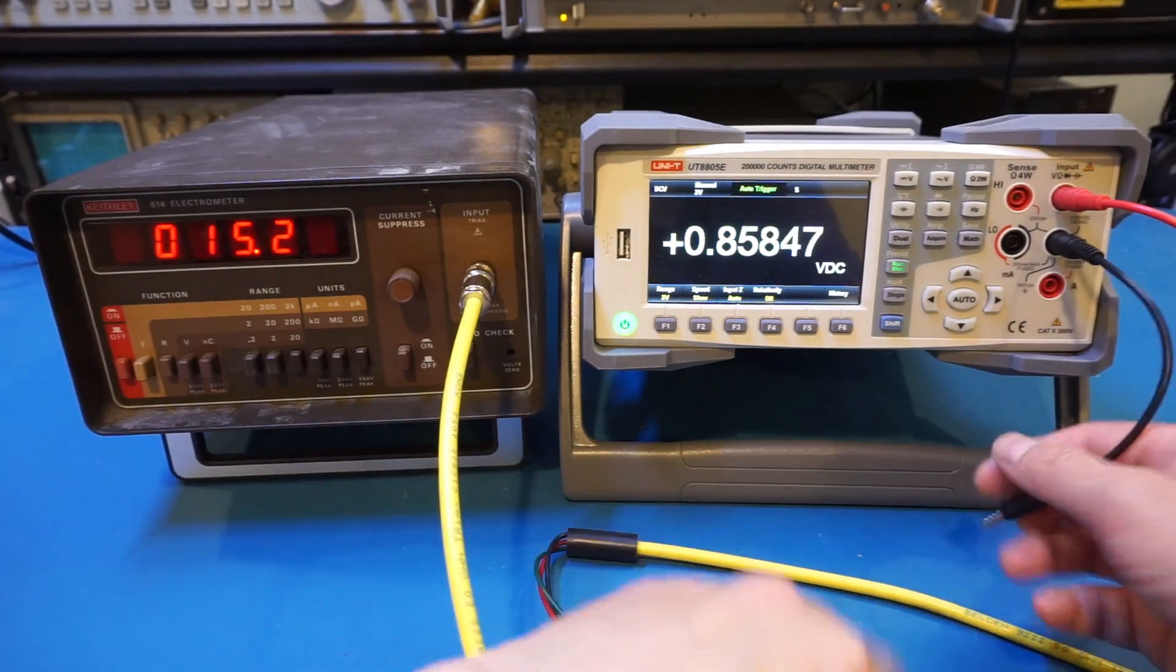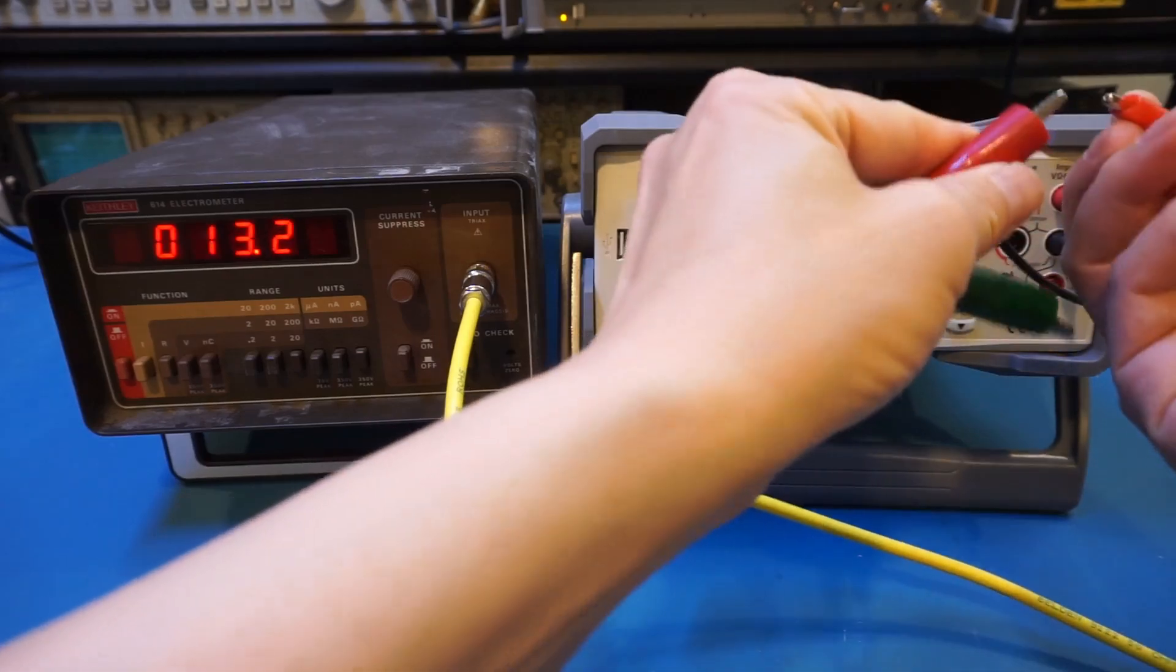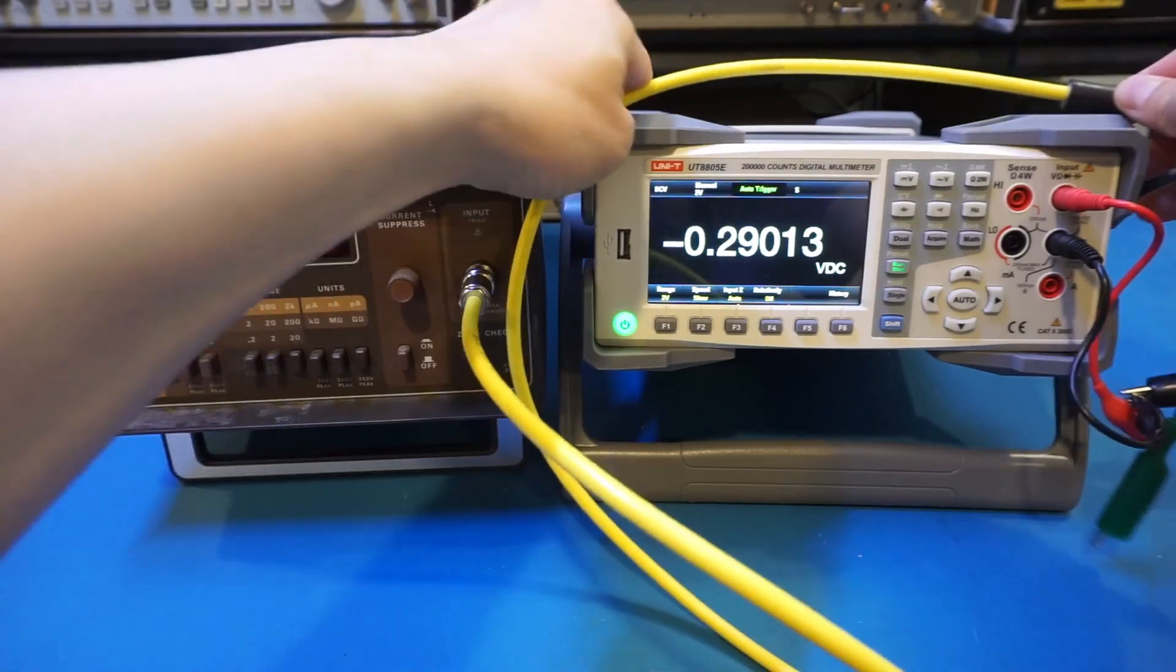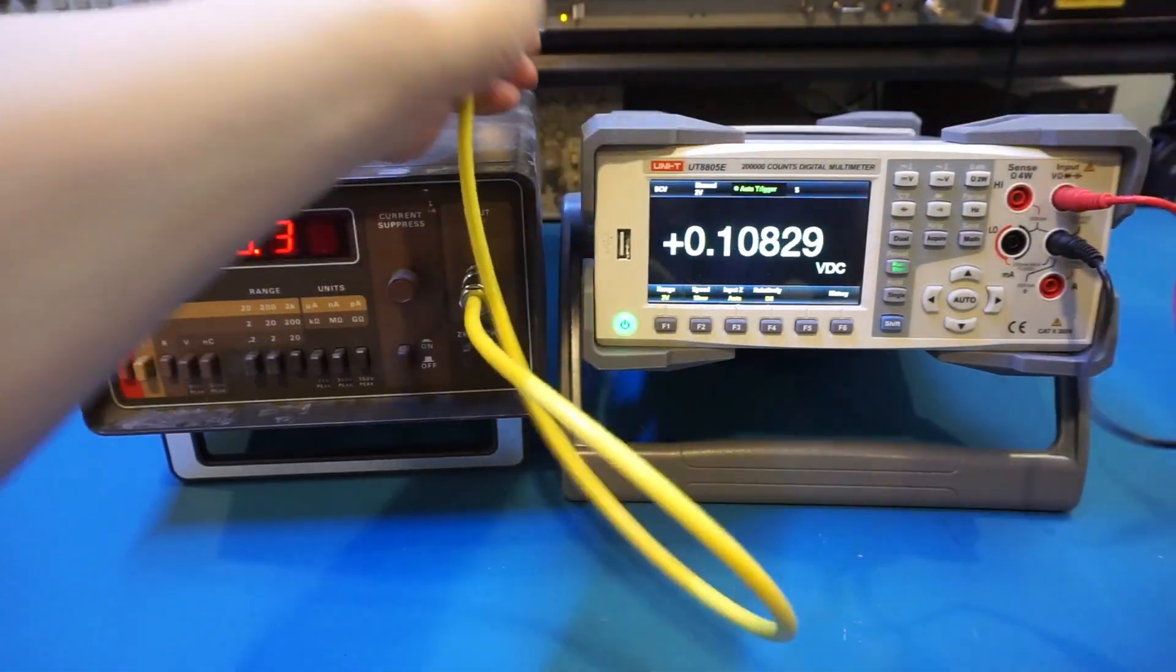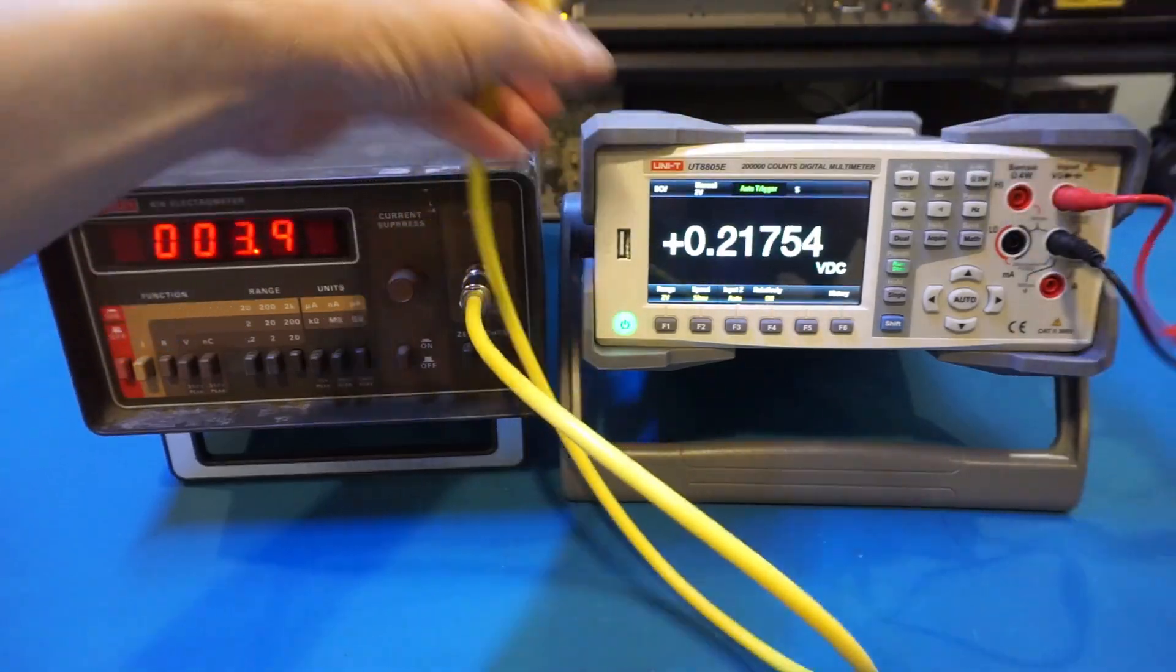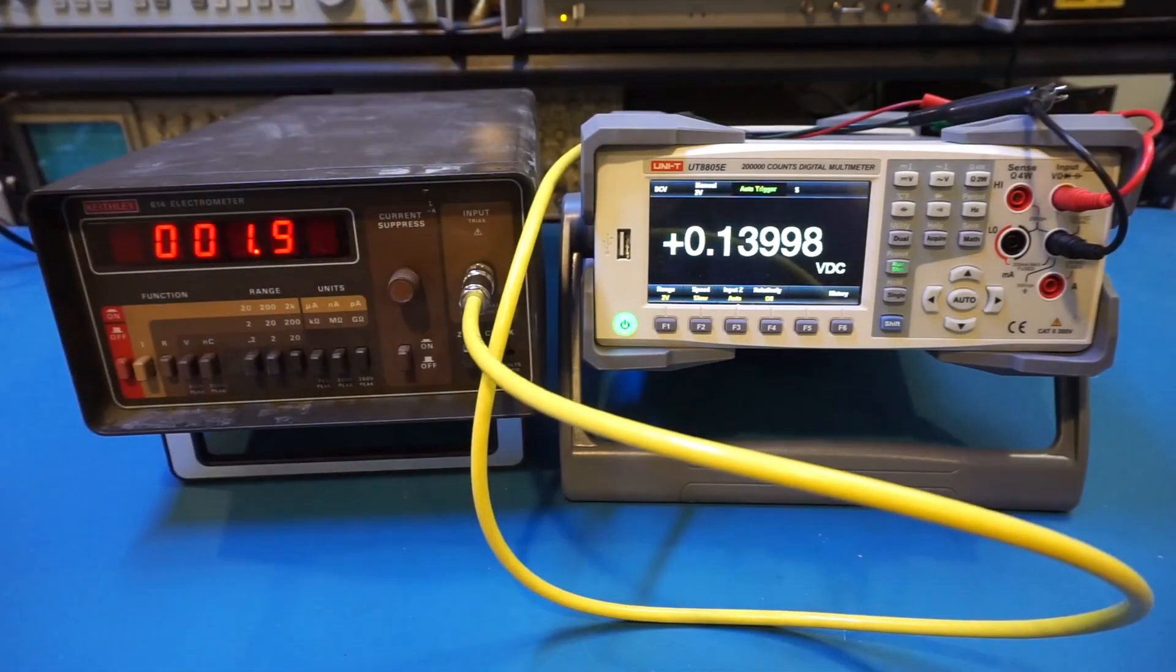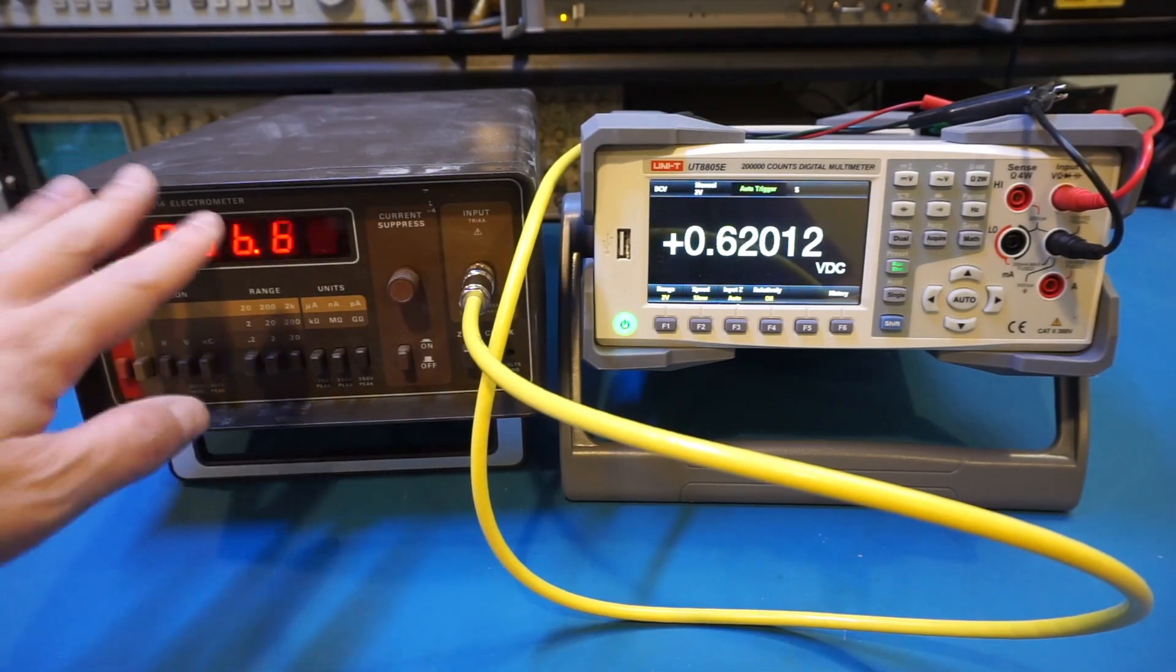So now let me connect the input of the multimeter to the Keithley here. And we'll try to not touch the surroundings, as it could impact our reading. So let's rearrange a little bit. Make sure everything is up here. And let's wait till the reading stabilizes.